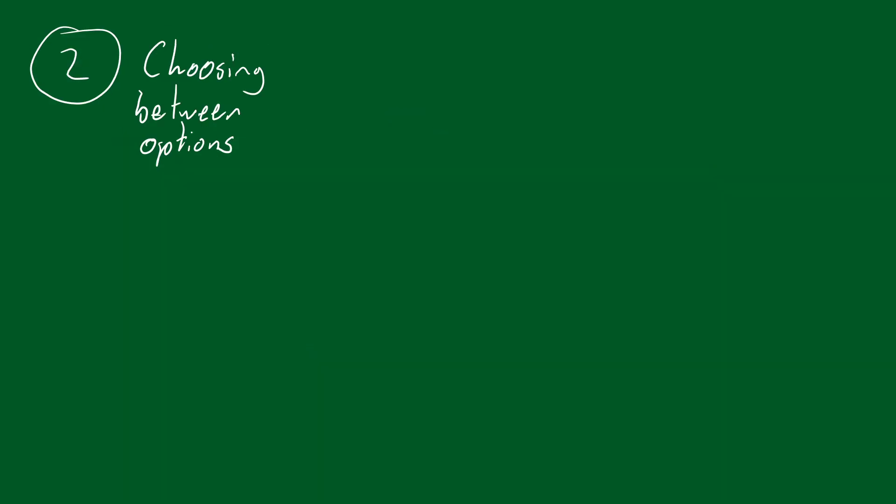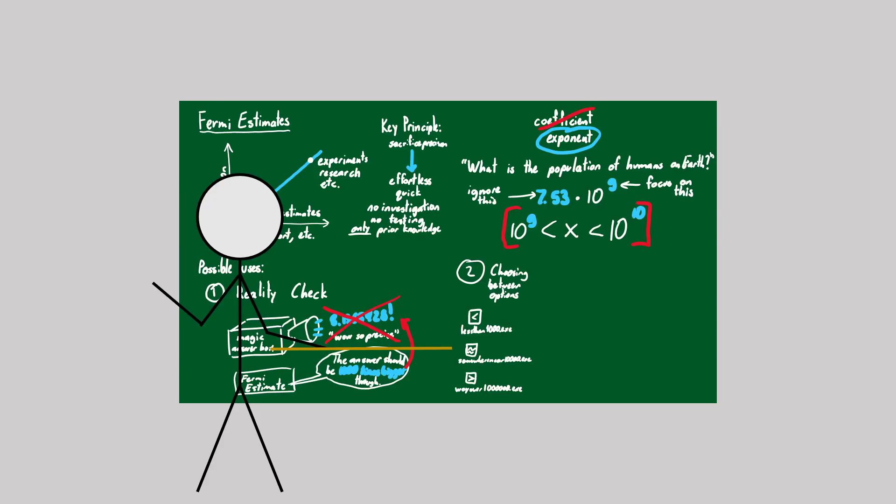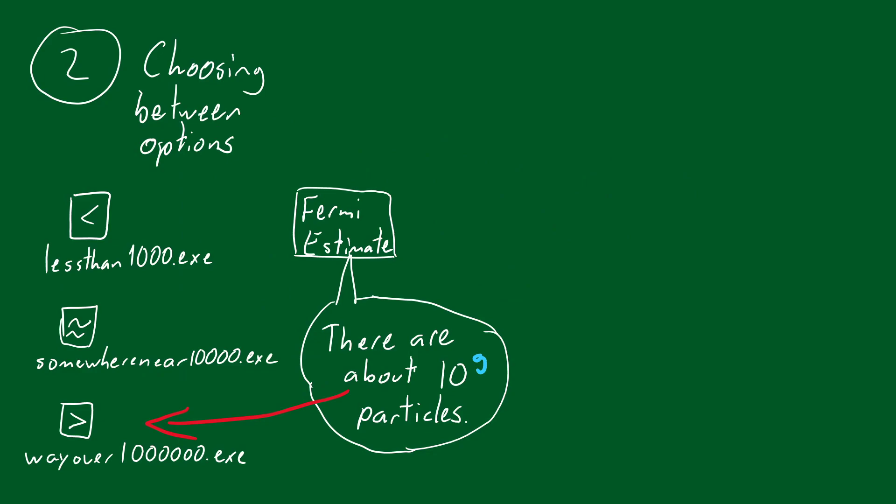There are also cases where there is a choice between multiple different sophisticated methods, which work best under varying conditions. For example, there are a variety of techniques for particle simulations, each of which is designed for a particular quantity of particles. Doing a quick Fermi estimate can help decide which method to use when it is not clear.